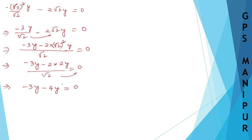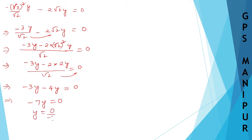Root 2 into 0 is 0, so we get minus 3y minus 4y, which is minus 7y equals 0. Therefore y is equal to 0 divided by minus 7, which gives y equals 0.